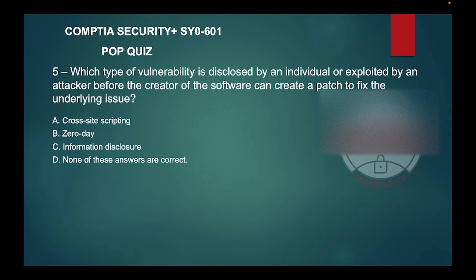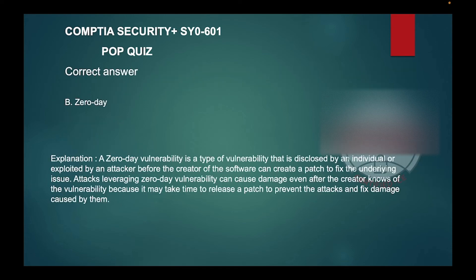Question five: Which type of vulnerability is disclosed by an individual or exploited by an attacker before the creator of the software can create a patch to fix the underlying issue? A) Cross-site scripting, B) Zero-day, C) Information disclosure, or D) None of these answers are correct. The correct answer is B — zero-day. A zero-day vulnerability is a type of vulnerability that is disclosed by an individual or exploited by an attacker before the creator of the software can create a patch to fix the underlying issue.